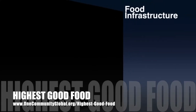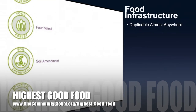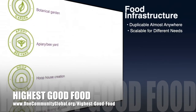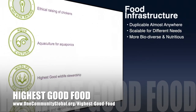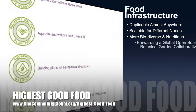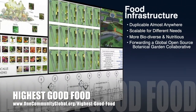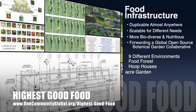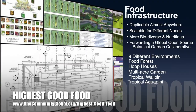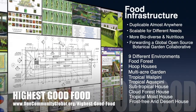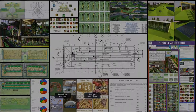One Community's approach to Highest Good Food is duplicable almost anywhere, scalable for different needs, more biodiverse and nutritious, part of forwarding a global open source botanical garden collaborative, and includes nine different free shared and duplicable growing environments. The next component is Highest Good Education — this component is complete and pretty much ready to launch once we're on the property.